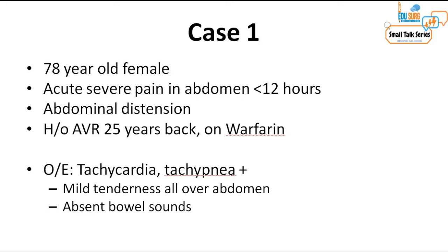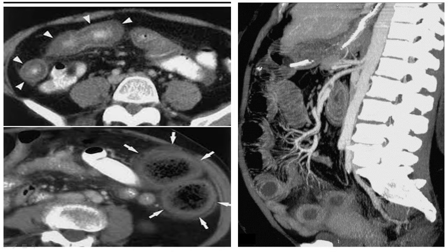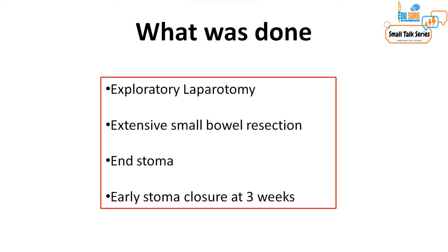Today's first case is a 78-year-old female with acute severe abdominal pain for 12 hours with abdominal distension. She has a history of aortic valve replacement 25 years back and is on warfarin. On examination there is tachycardia, tachypnea, diffuse tenderness, and absent bowel sounds. Imaging showed bowel wall edema, pneumatosis intestinalis, and blockage of the superior mesenteric vessels. She required urgent exploratory laparotomy with removal of almost the entire superior mesenteric territory — extensive small bowel resection resulting in short gut syndrome.